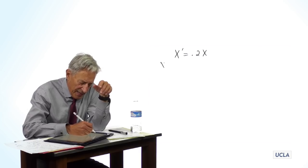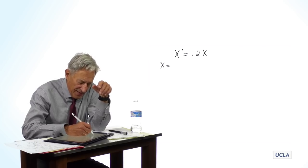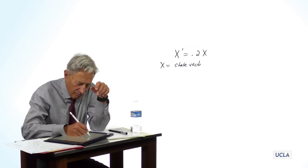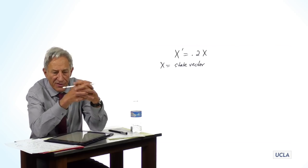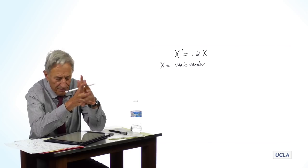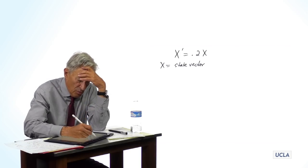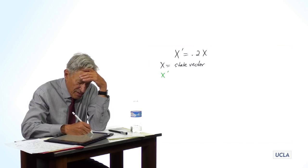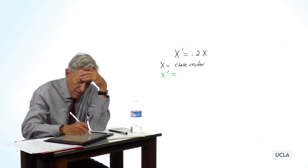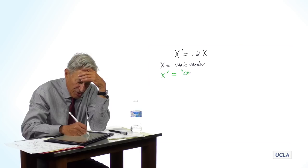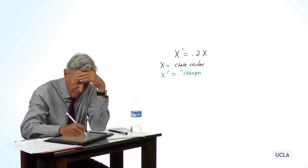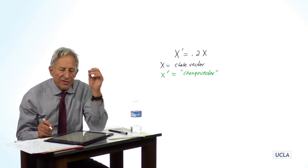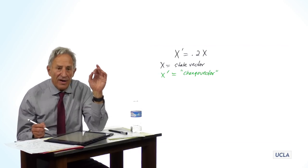We talked about x as the state vector. The vector that represents the state of the system at a time. We are now going to introduce a new concept, which is that x prime is a change vector. And we are going to visualize that in the following way.